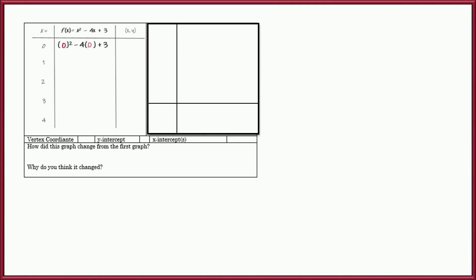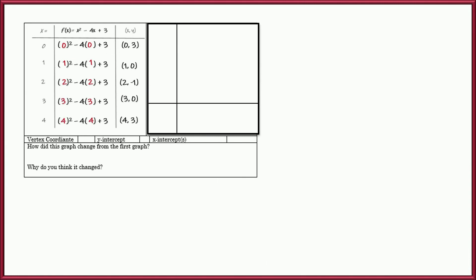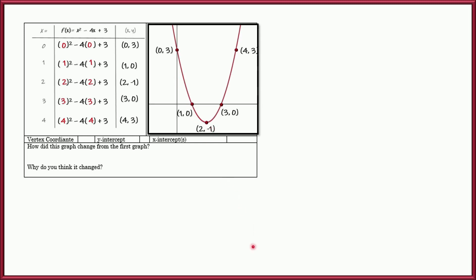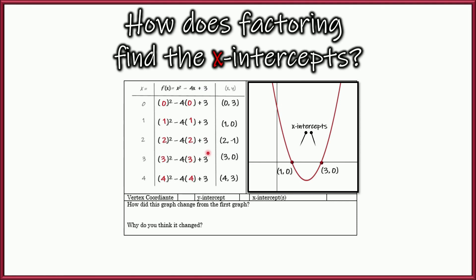Up until now, we've taken quadratic equations like x squared minus 4x plus 3, filled out a t-chart, plotted all those points, and learned how to make parabolas. We've learned what the y-intercept, x-intercepts, and vertex are, and how to find the y-intercept and vertex in both standard form and vertex form. However, the x-intercepts — how do we find those? Today we're going to explore how to find them by factoring, because t-charts can be inefficient and don't always help you find x-intercepts.